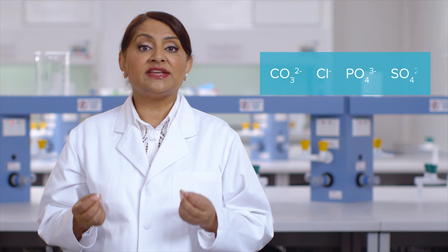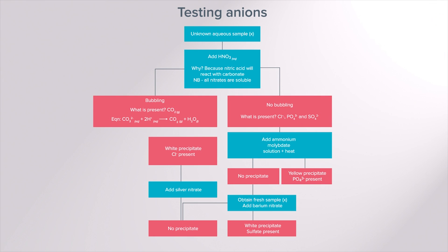The anions carbonate, chloride, phosphate and sulfate need to be identified in a sample. Once again a logical sequence of chemical testing needs to take place.